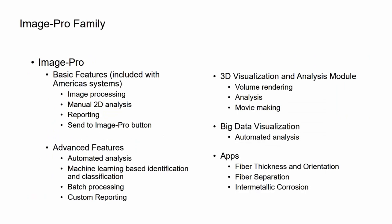ImagePro consists of ImagePro with a set of basic features, which is included with Hitachi systems going out in the Americas. This includes image processing, image pre-processing, filtering, manual 2D analysis where you're taking measurements, defining the region of interest, point-to-point measurements, and being able to generate reports. This also includes a special feature — a send-to-ImagePro button on a number of SEMs or TEMs to send the image directly into ImagePro. Then there's the ImagePro advanced features, which is a separate edition including automated 2D analysis, machine learning-based segmentation, identification of materials or objects, classification, batch processing, and custom reporting of data.